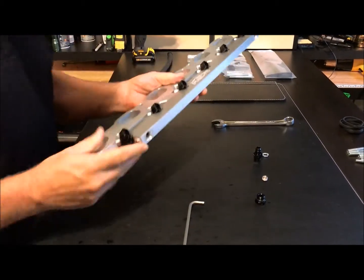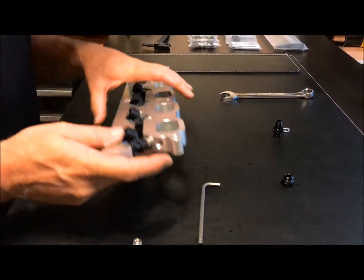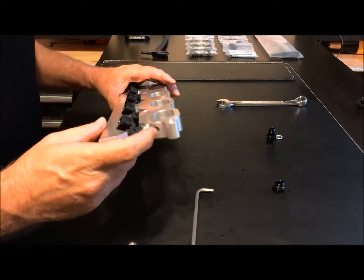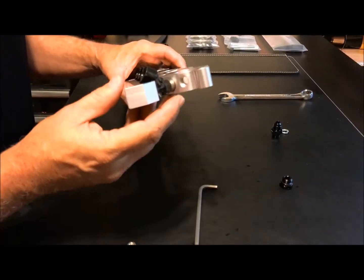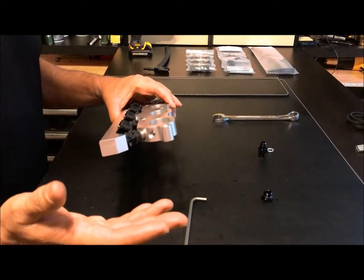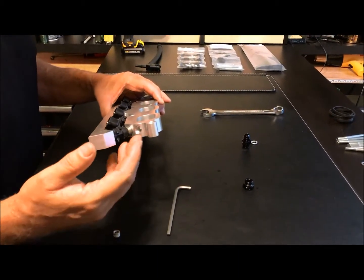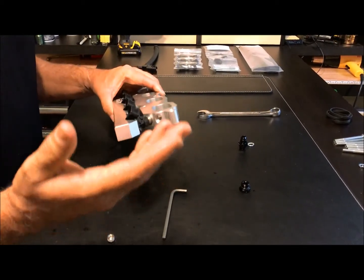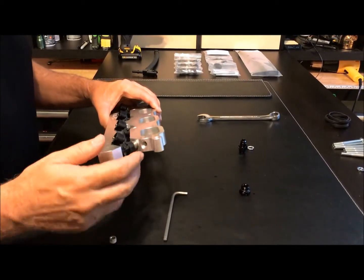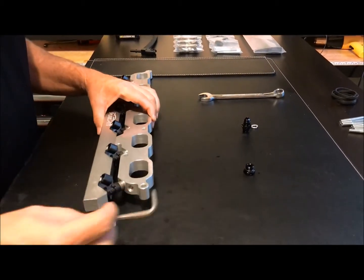Okay. So, we have one more available or one more port plug we need to install. This is Cylinder 6. This was an option we just recently added. This is a boost reference. So, if you're running, say, our stage 3 or stage 4 pump and you're using a Hobbs switch to trigger the secondary or maybe you've got a boost gauge or what have you. That's what this boost reference port is for.